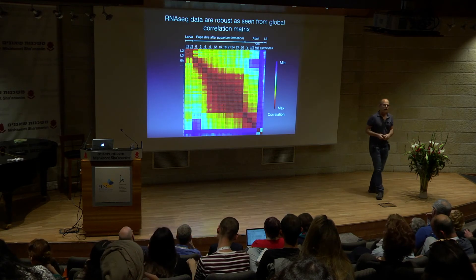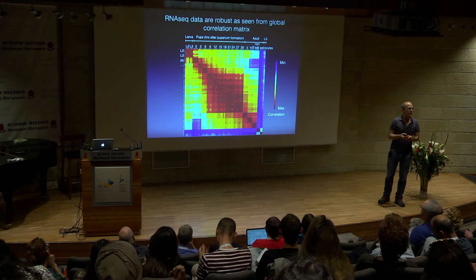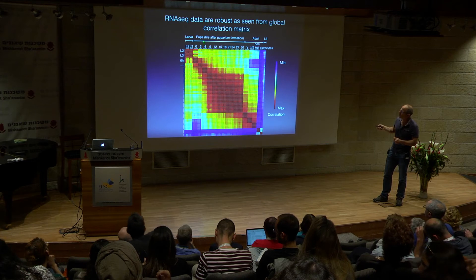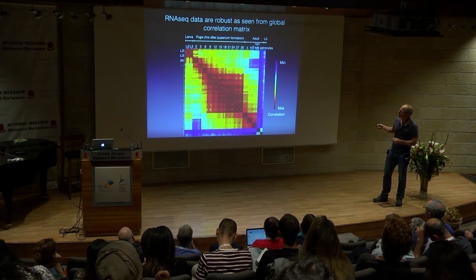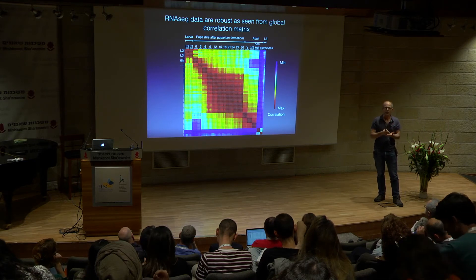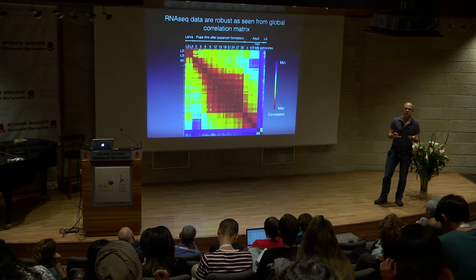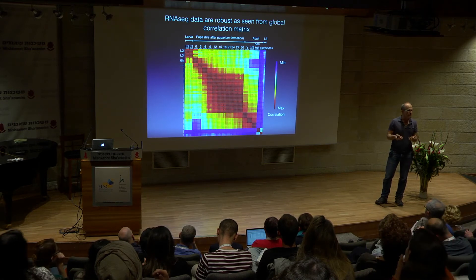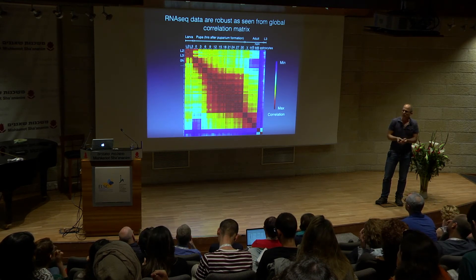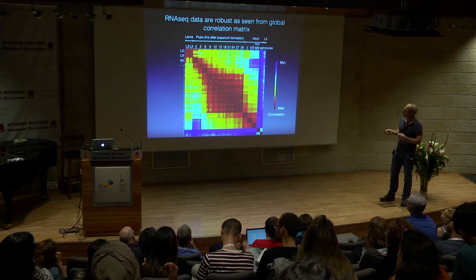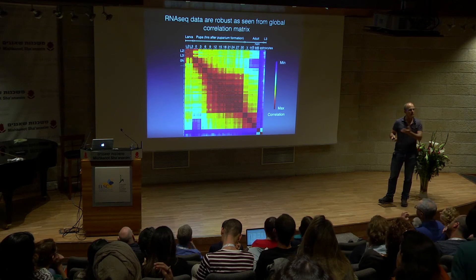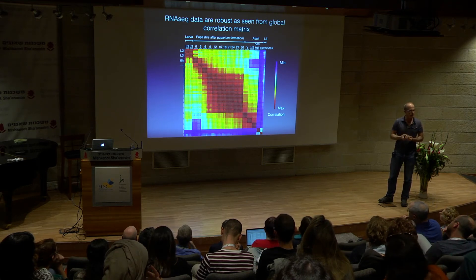This is a global correlation view of the sequencing we've done. We performed a lot of developmental time points—in pupa, between zero and 30 hours after pupal formation, we sequenced the neurons every three hours. In a previous experiment we did fewer time points, but it was clear from the results that we needed finer developmental resolution. For each time point, we did either a triplicate or quadruplicate, and the samples are very similar, suggesting the sequencing is very robust.